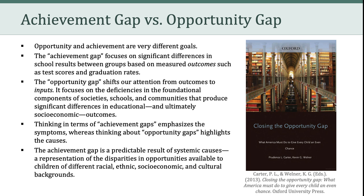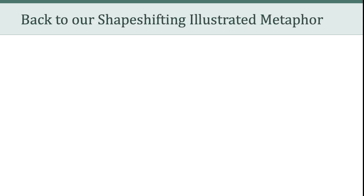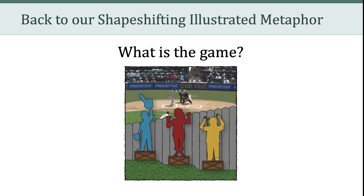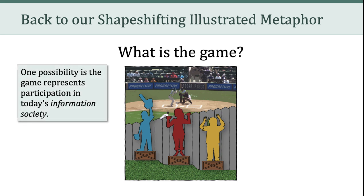A convenient way to think about it is that achievement gaps emphasize the symptoms, whereas thinking about opportunity gaps highlights the causes of those symptoms. Framing education in this light reveals the idea that the achievement gap is a predictable result of systemic causes — a representation of the disparities in opportunities available to children of different racial, ethnic, socioeconomic, and cultural backgrounds. So I want to come back to our shape-shifting illustrated metaphor and ask the question, what is the game? What I want to posit is that the game represents participation in today's information society. The participants behind the fence here have different levels of opportunity when it comes to participating in the information society.